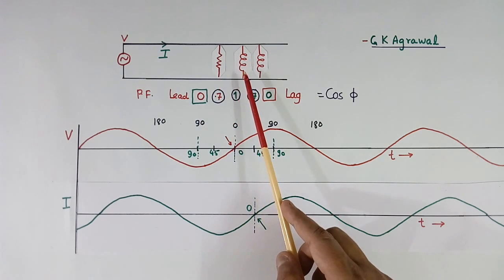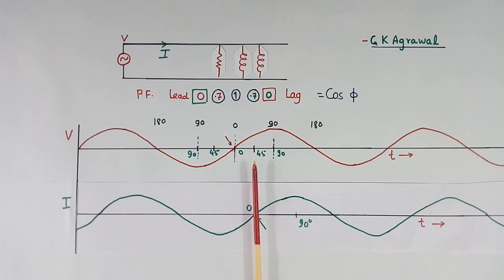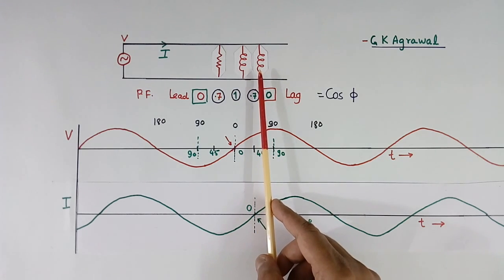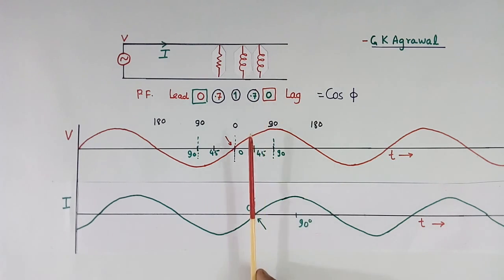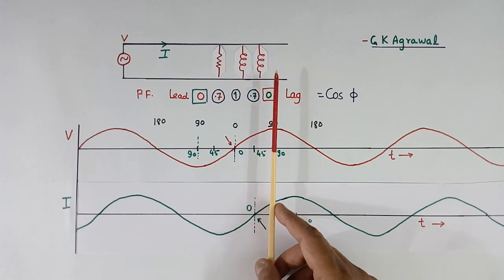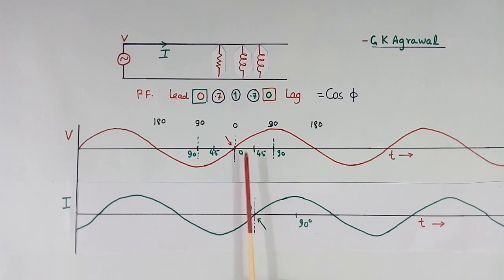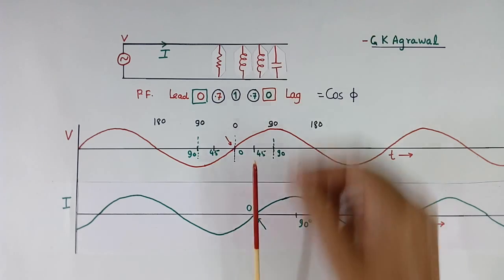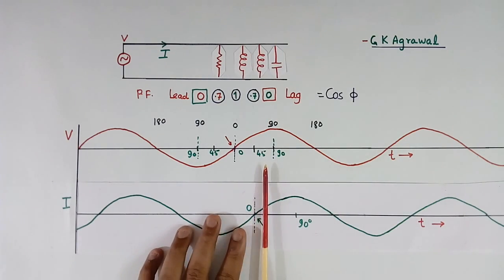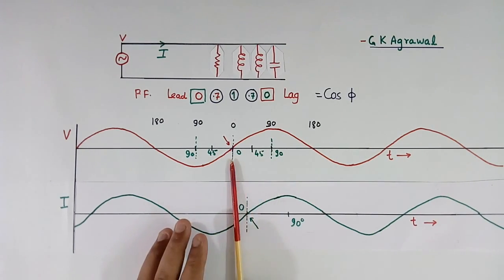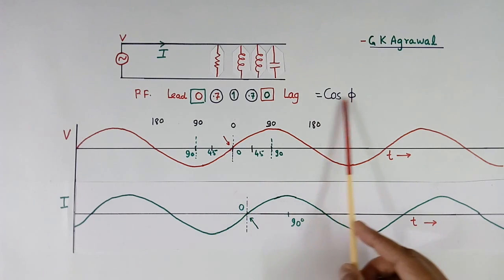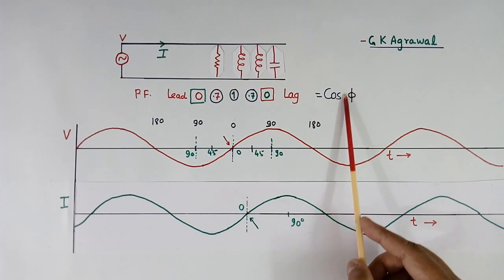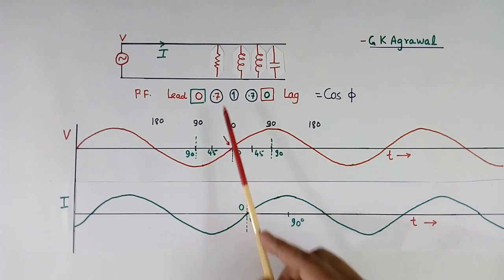Here R and L both loads are there, and current is lagging by 45 degrees. Because of the inductor, current moves to the right side, and because of a capacitor — which is not here — it would move left side. Now if we want to reduce this angle, we have to put a capacitor. If we put a capacitor here, this current will shift left side again, so the angle between the two zero crossings will come down, and the power factor will improve. The lower the angle, the better the power factor.